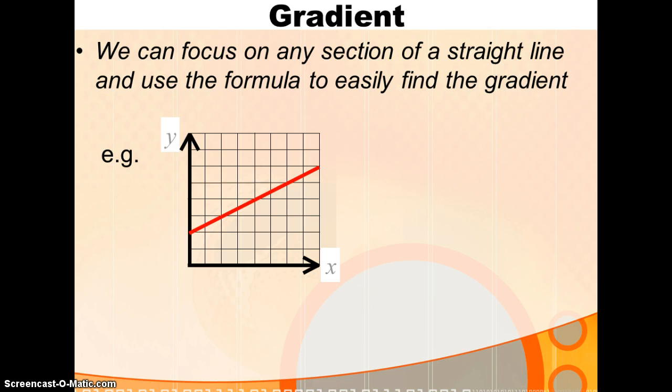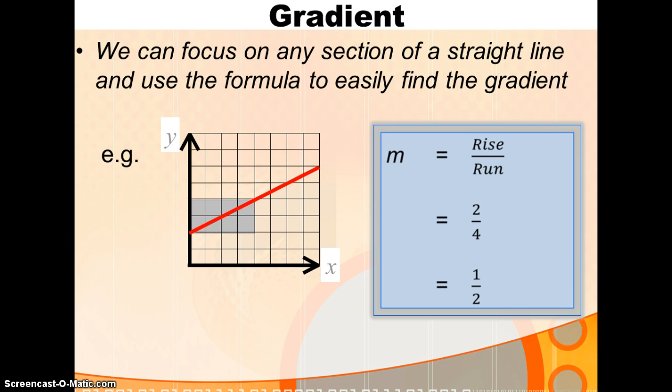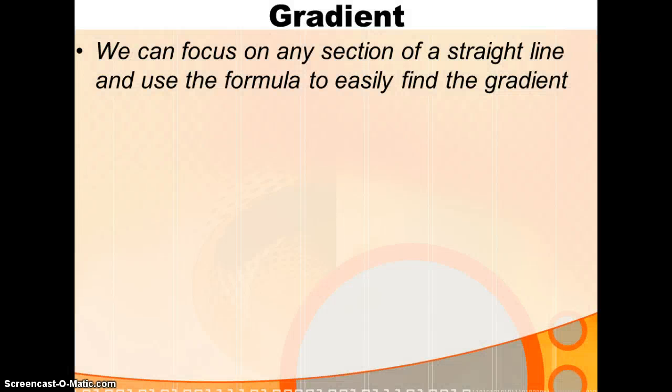Looking at the same line, if we again focus on, this time focus on a smaller area, then, what's our rise? We've climbed up 2. How far along have we come? What's our run? We've come along by 4. So, the gradient is rise over run, which is 2 over 4, which again gives us an answer of a half.